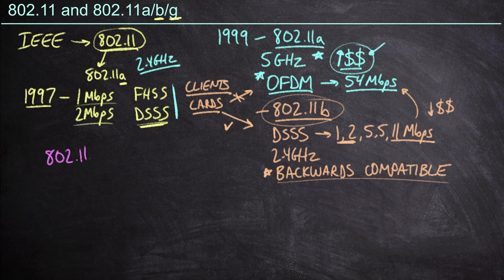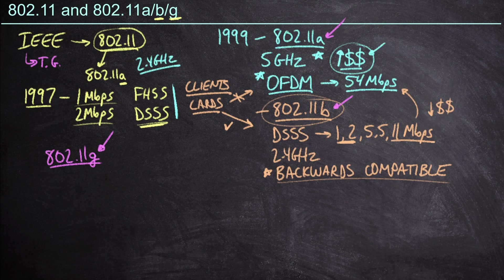Lastly, we have 802.11g. If you're wondering what happened to 802.11c, these letters aren't only used for Wi-Fi generational increases — the IEEE was constantly forming new task groups that brought other enhancements to the 802.11 specification. By the time we were ready to increase the generation again, letters C, D, E, and F were already taken. That's why we land on 802.11g. It came out in 2003, a few years after 802.11a, and it basically sealed the deal on being done with deploying 802.11a, because it bridged the gap between B and A by delivering the same technologies into the 2.4 gigahertz space.